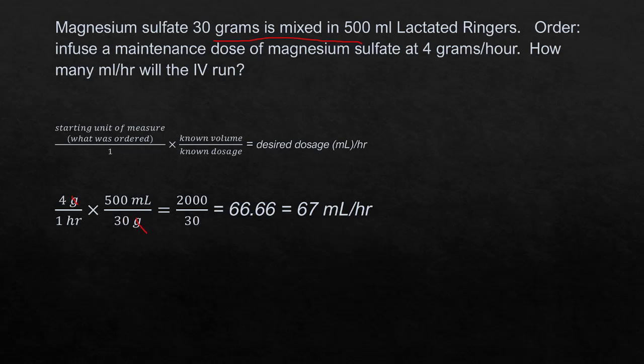So we multiply across the top. 4 times 500 is 2000. 1 times 30 is 30. 2000 divided by 30 is 66.66 repeating, and so we are going to round that up to 67. Our answer is 67 milliliters per hour for this question. Let's go on to our next question.